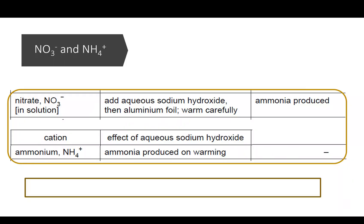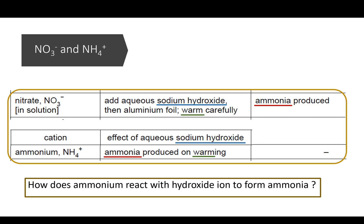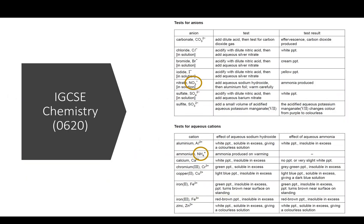The next section is nitrate and ammonium ions. Find the similarities between the two tests. They both use sodium hydroxide. They involve warming and in both cases, ammonia is produced. I'm going to address this question soon. How is ammonium converted to ammonia? But before that, look at the list again.